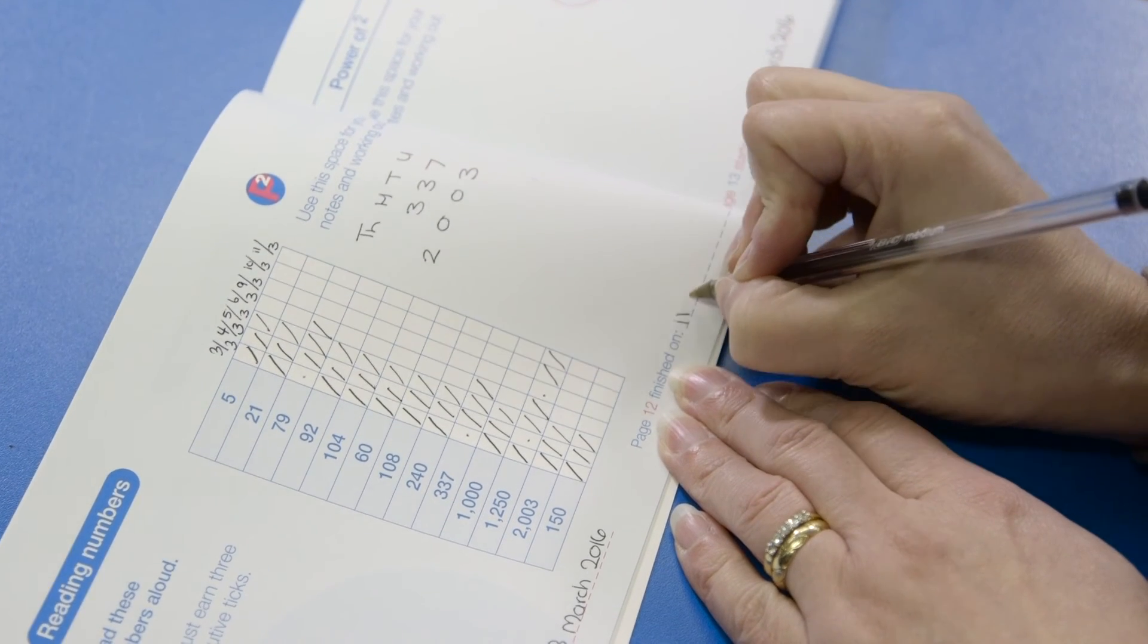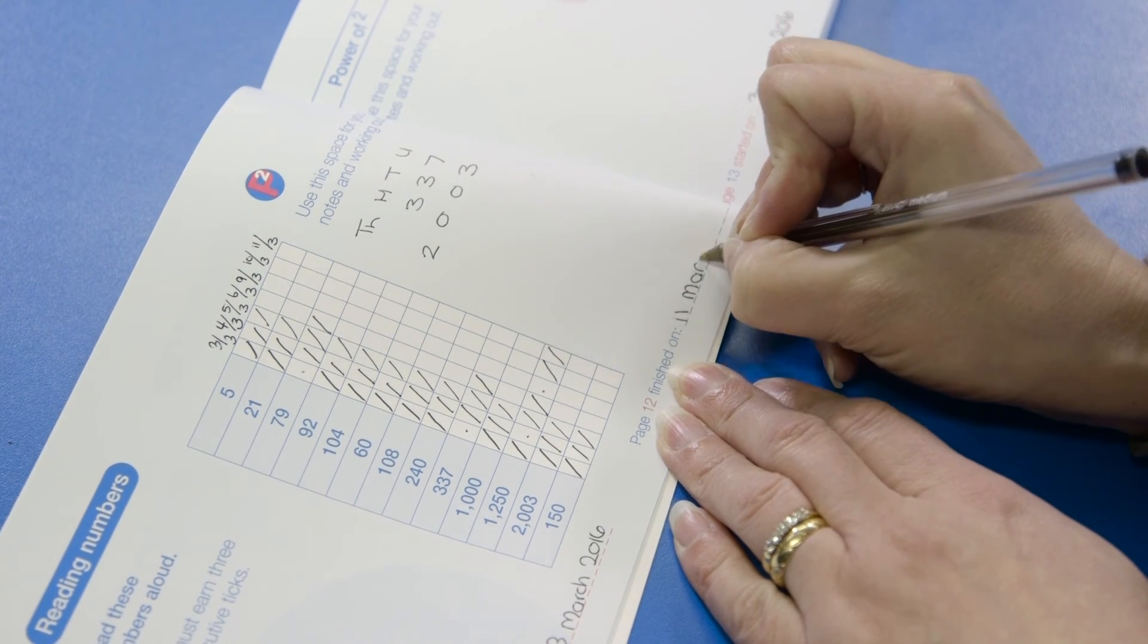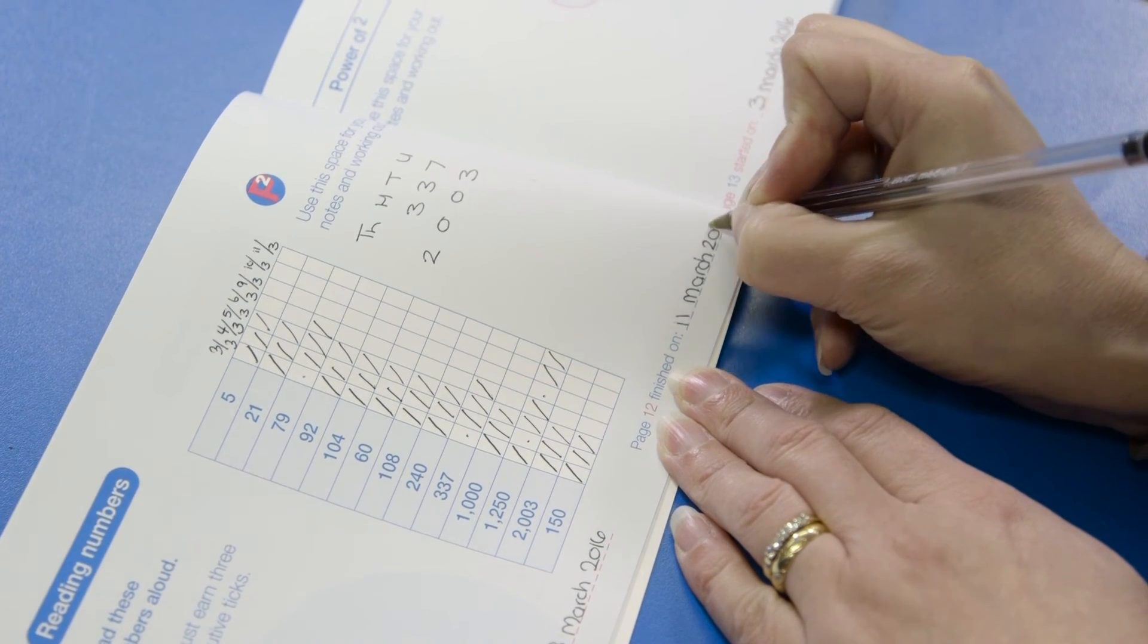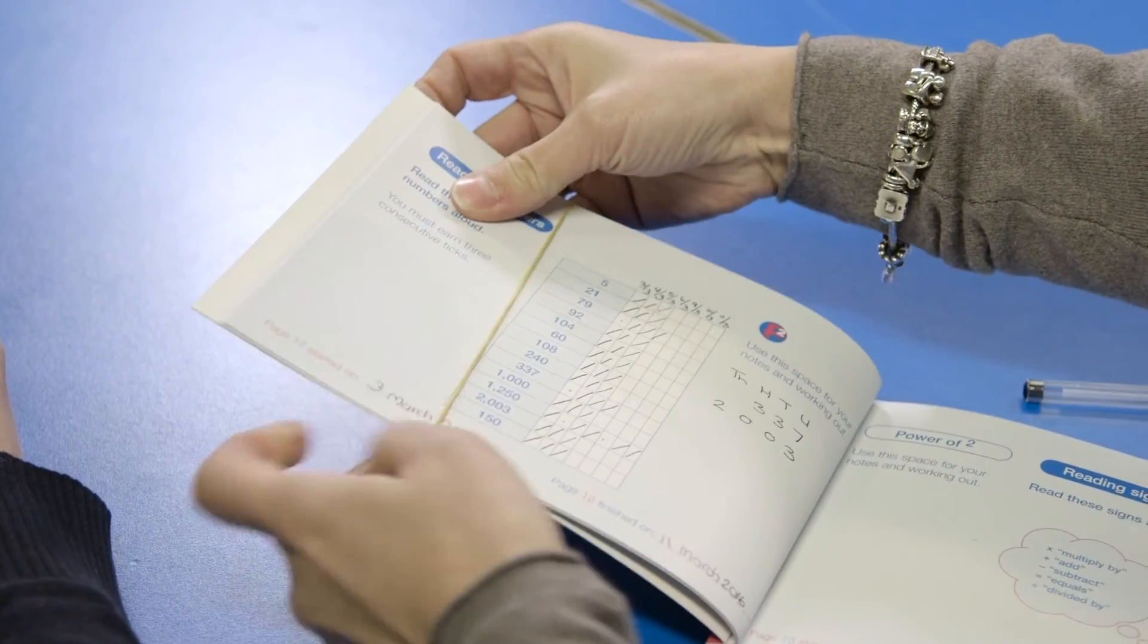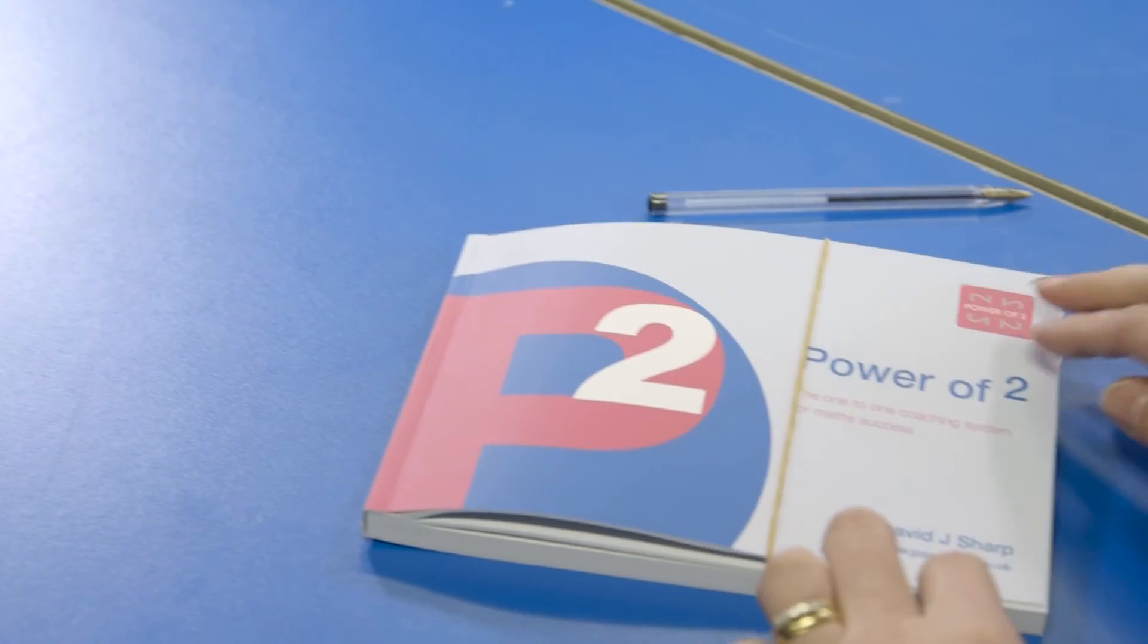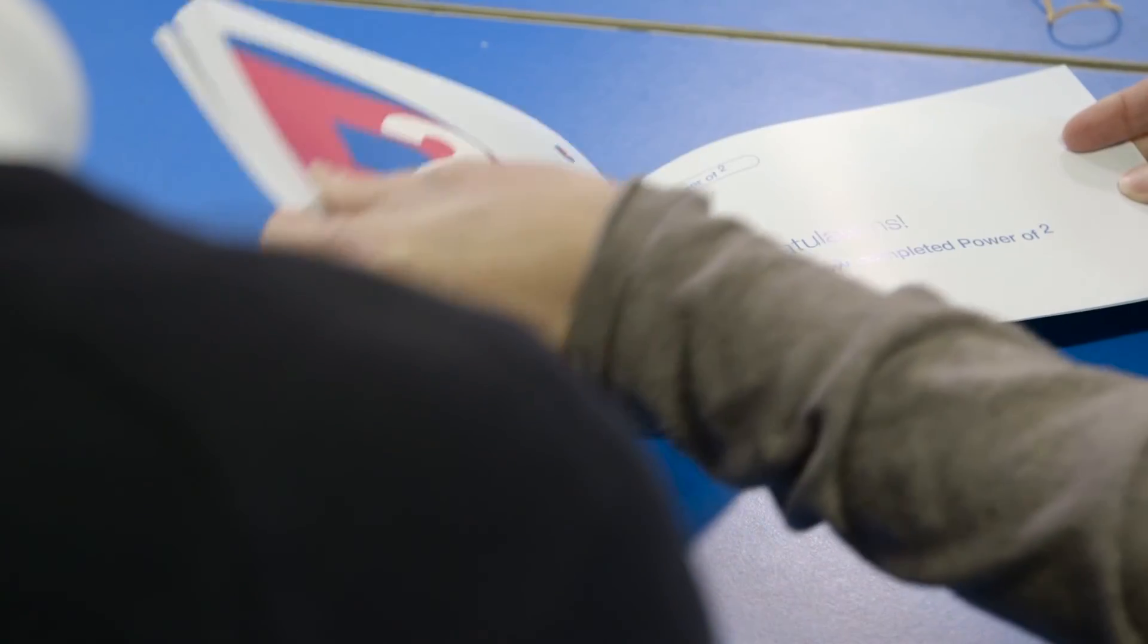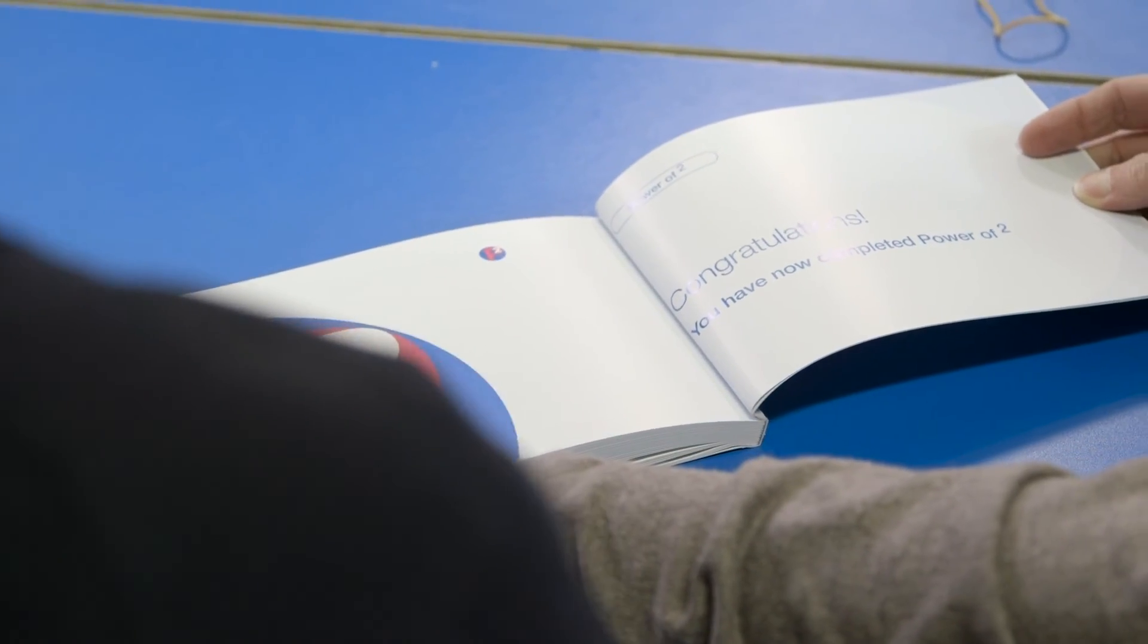Write the finished date on the page when all the questions on it have three consecutive ticks, or you've transferred a question to a recap grid. An elastic band is great to hold the completed pages, and works well in showing the progress that's been made. Continue working through the book until all the pages are finished.